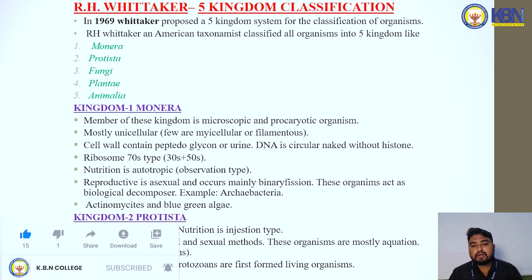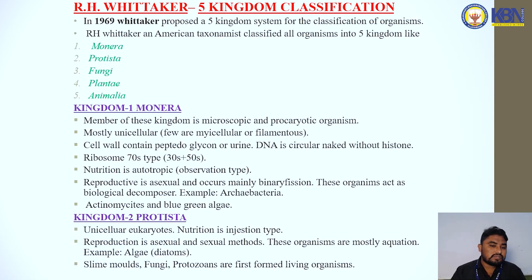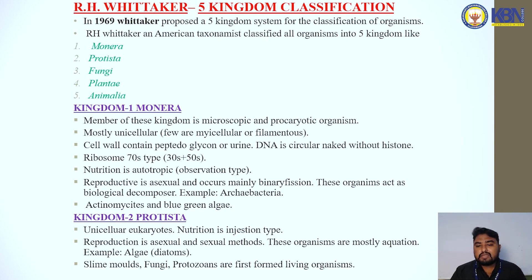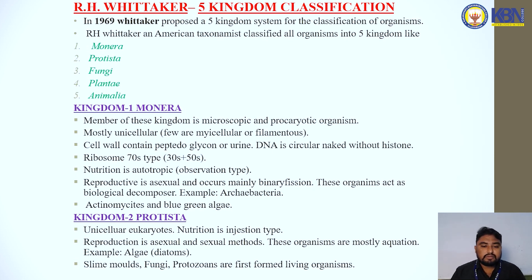The first is Kingdom Monera. Members of this kingdom are microscopic and prokaryotic organisms, mostly unicellular, with a few multicellular or filamentous forms. The cell wall contains peptidoglycan or murin. The DNA is cellular and lacks histones. Ribosomes are 70S type — that is, 30S and 50S subunits. The nutrition is autotrophic.